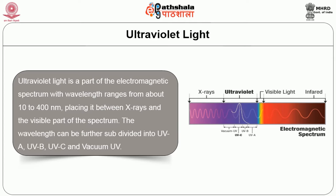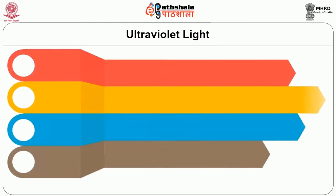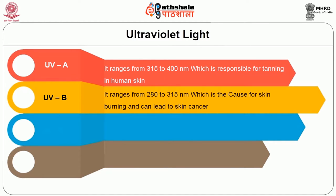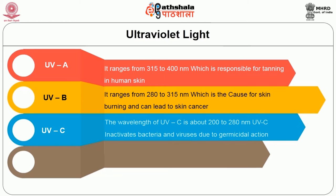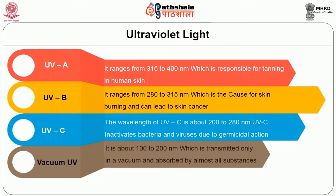The wavelength can be further subdivided into UVA, UVB, UVC, and vacuum UV. UVA ranges from 315 to 400 nanometers, responsible for tanning in human skin. UVB ranges from 280 to 350 nanometers, causing skin burning and can lead to skin cancer. UVC is about 200 to 280 nanometers and inactivates bacteria and viruses due to germicidal action. Vacuum UV is about 100 to 200 nanometers, transmitted only in vacuum and absorbed by almost all substances.